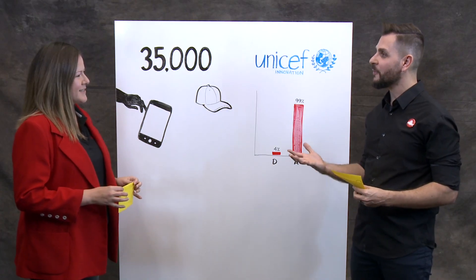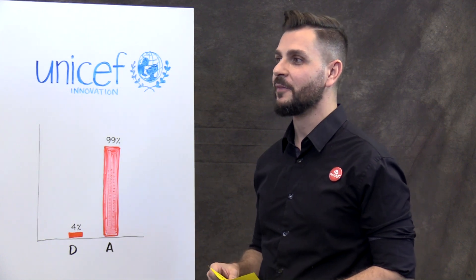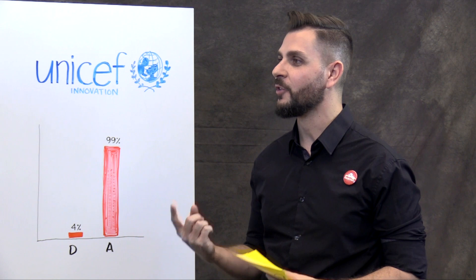Great point. So 35,000 is the number of decisions that everyone makes every single day. So can you believe that? It's almost like one decision every two seconds. So one, two, you just made a decision and I hope it's to keep watching.